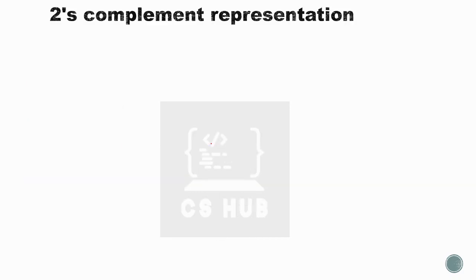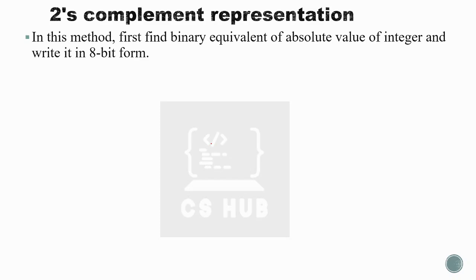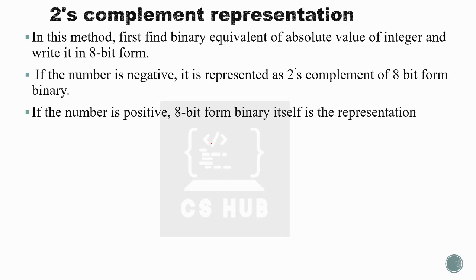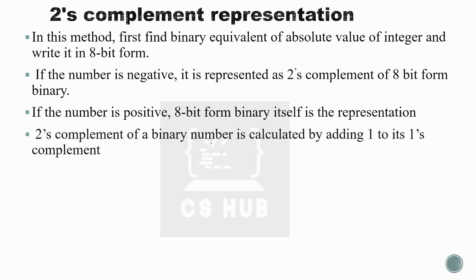Now let's move to two's complement representation. For two's complement, the steps are similar: find the absolute value binary equivalent in 8-bit form. If the number is negative, it is represented as the two's complement of its 8-bit binary form. If the number is positive, the 8-bit binary itself is the representation. Two's complement is calculated by adding 1 to the one's complement.